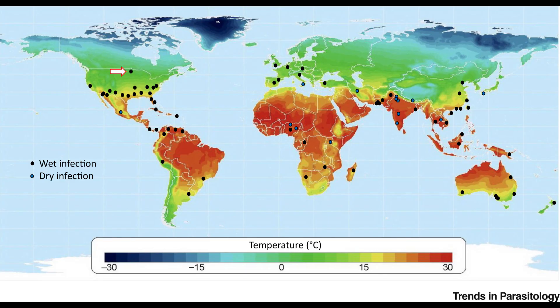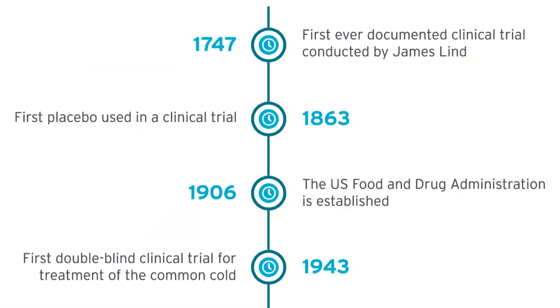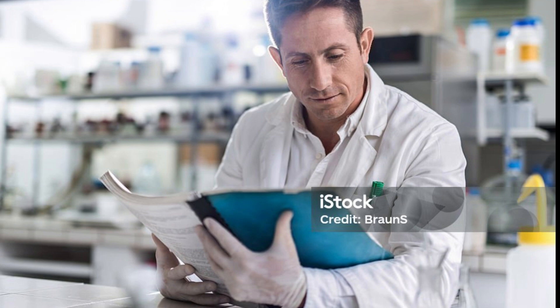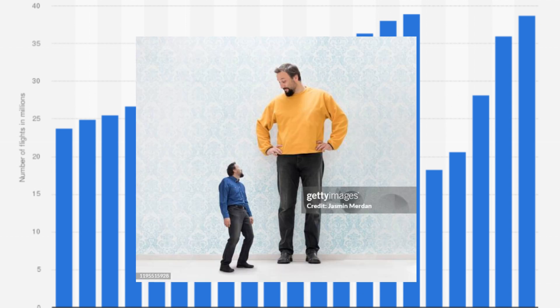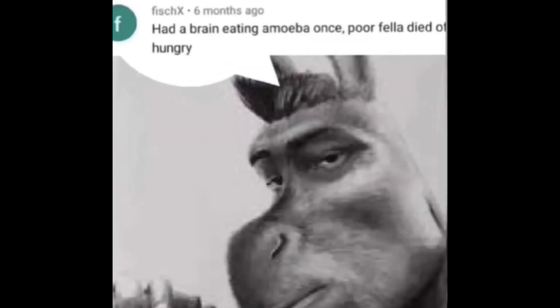Naegleria fowleri has a staggering 97% death rate, so saying most wouldn't want to catch it is a massive understatement. Thankfully, cases are extremely rare, with only 381 recorded cases from 1747 to 2018, though cases may have gone undocumented. This means roughly 1.4 individuals worldwide would be victim to Naegleria fowleri per year. No cases have been spotted in Canada so far. However, there may still be other harmful bacteria in unmaintained fresh water, so make sure to be careful what fresh water you enter this summer.